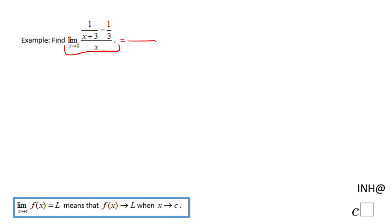The first thing you want to do is plug in 0 and see what you get. We get 1 over (0+3) minus 1/3, all over 0. If you notice, we end up with 0/0. 1/3 minus 1/3 is 0, and the denominator is 0. This is an undefined form.